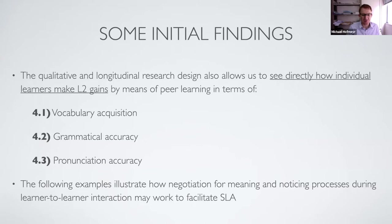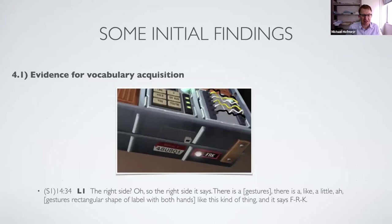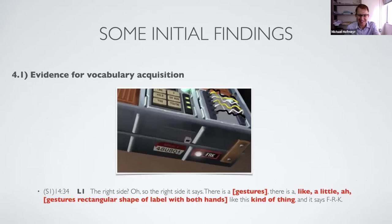For vocabulary acquisition, we have a student describing the bomb — at the bottom she sees a rectangular shape with 'FRK' written on it and can't think of what to call it. She gestures a rectangular shape in the form of a label. In the game vocabulary this is called a 'label,' and she says 'this kind of thing' — she can't produce the word. Then in a later interaction from the following session, learner two uses the word 'label.'